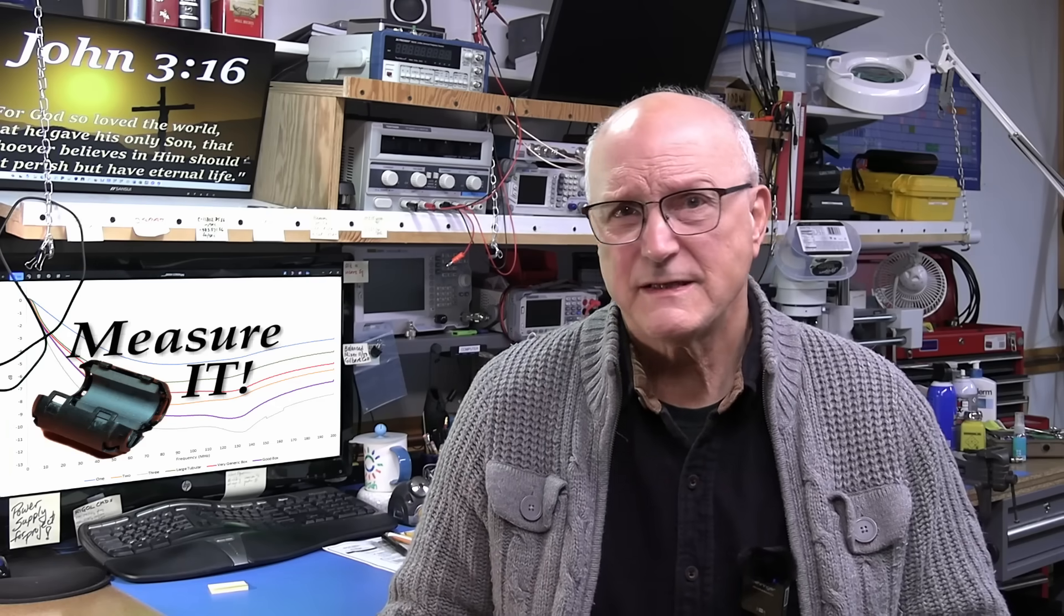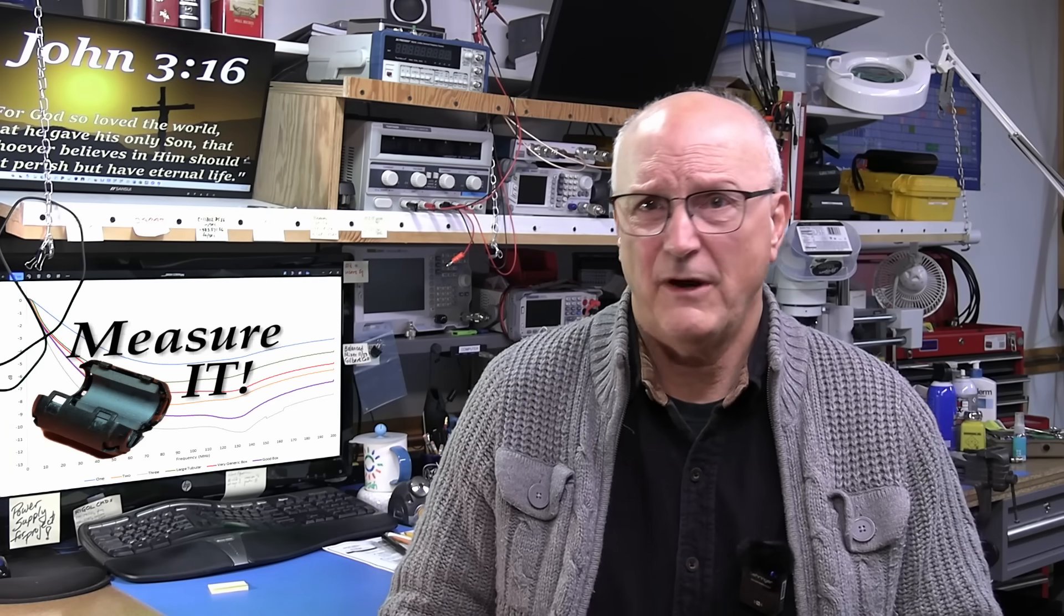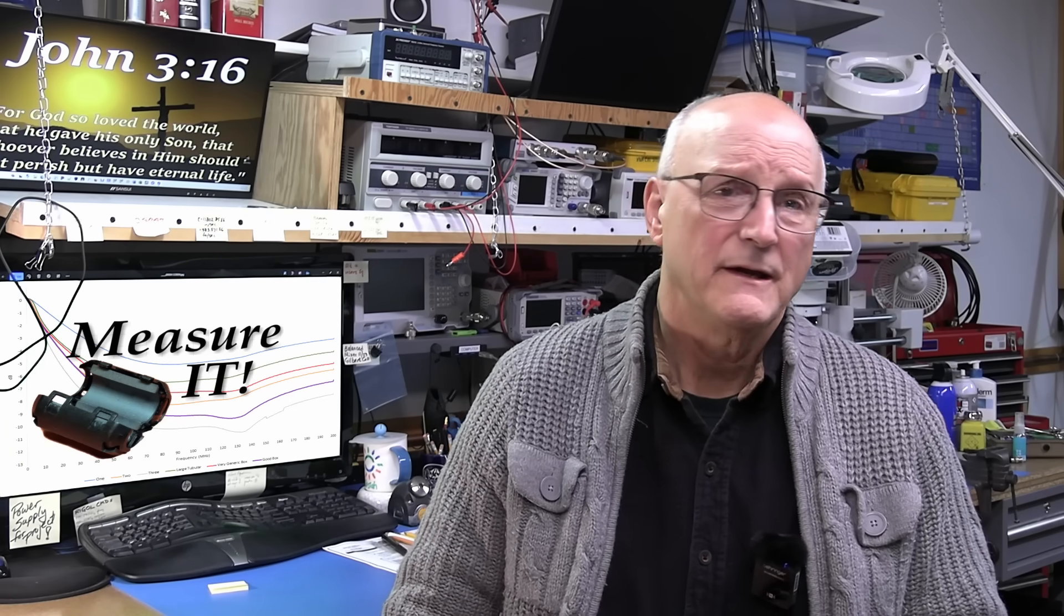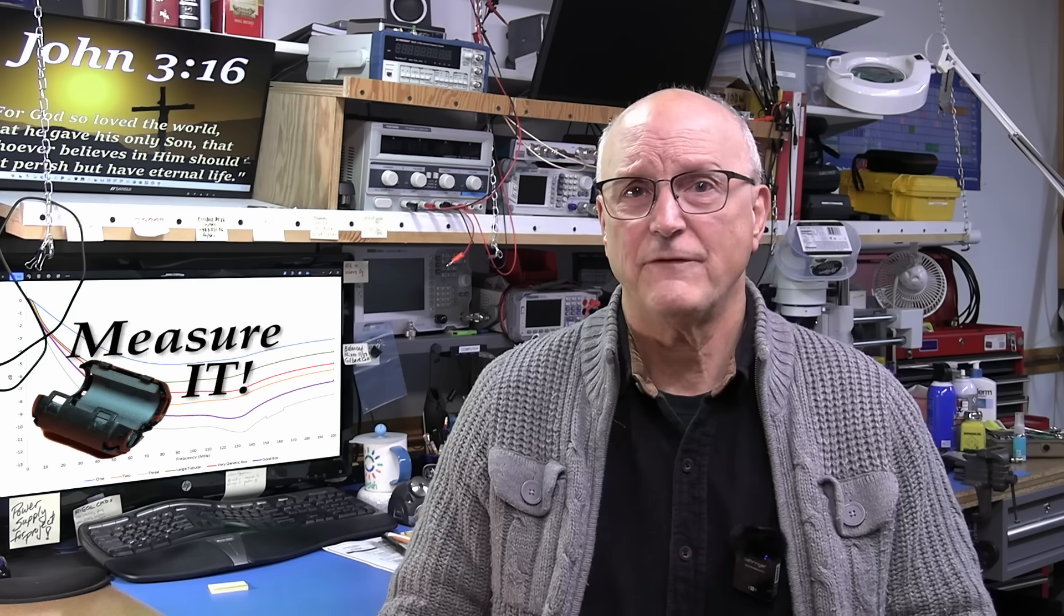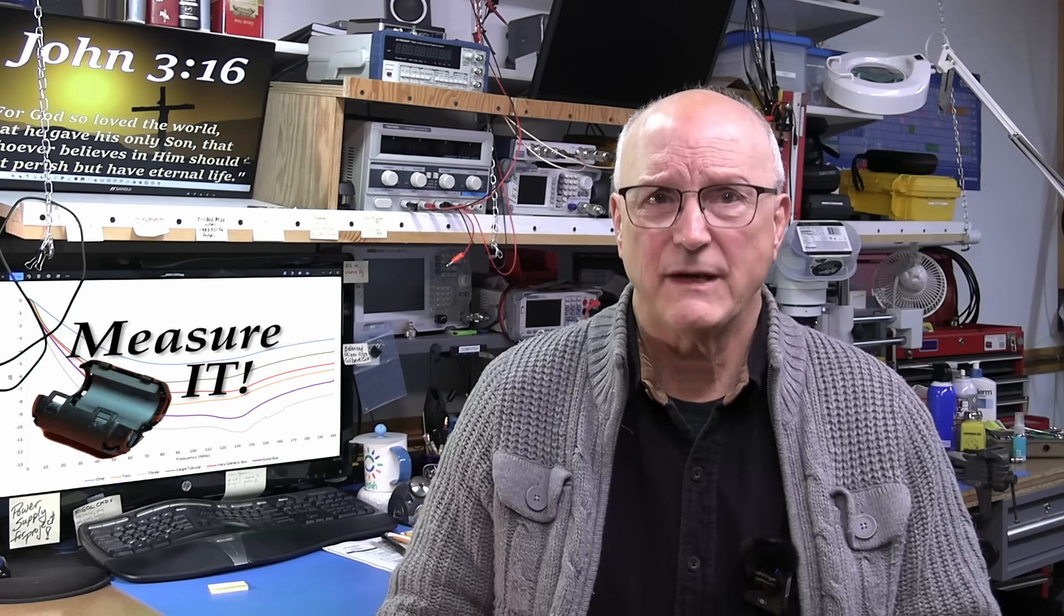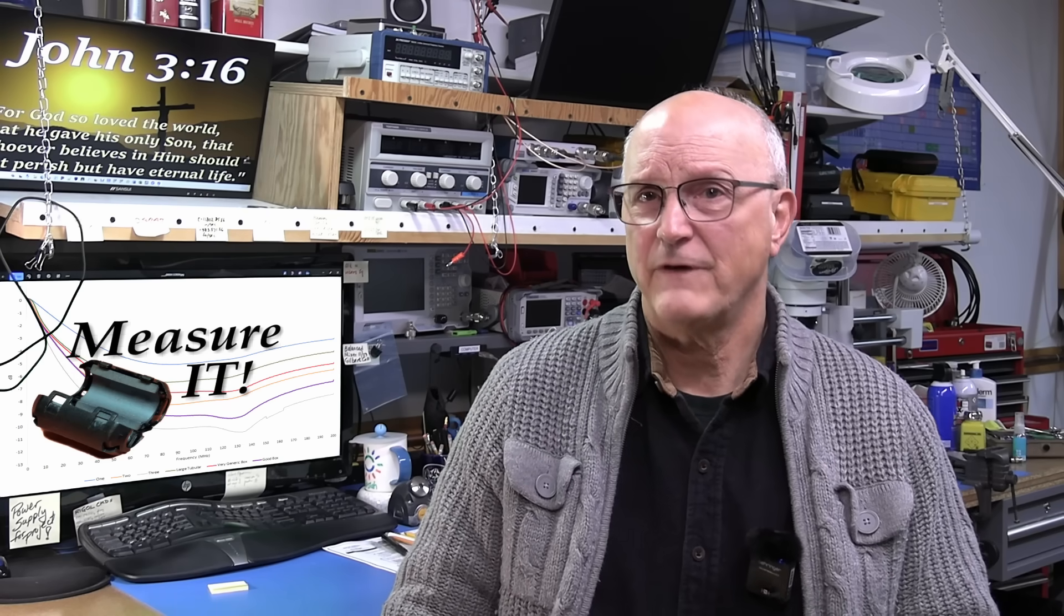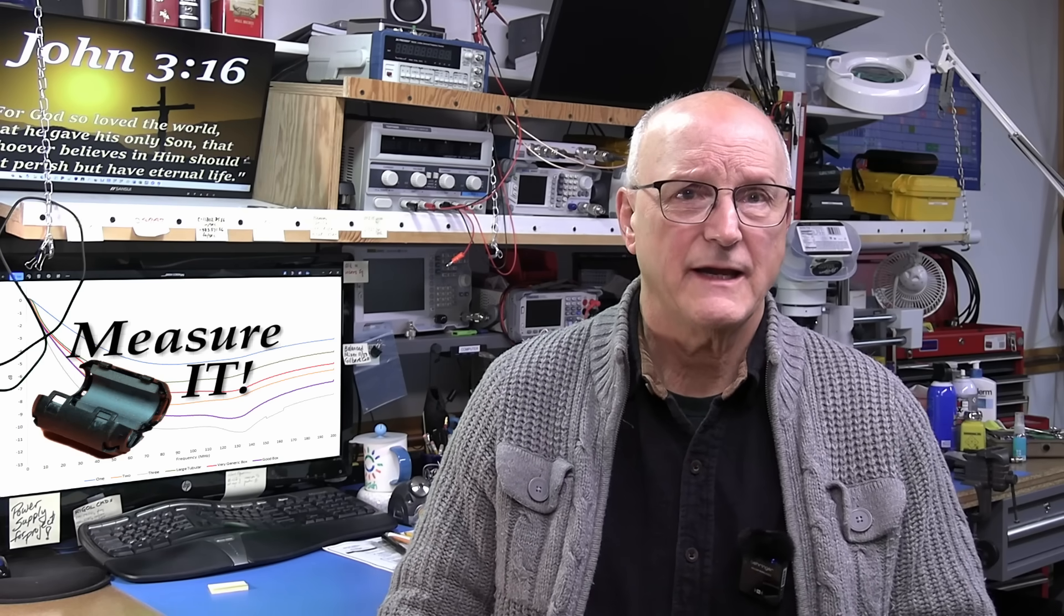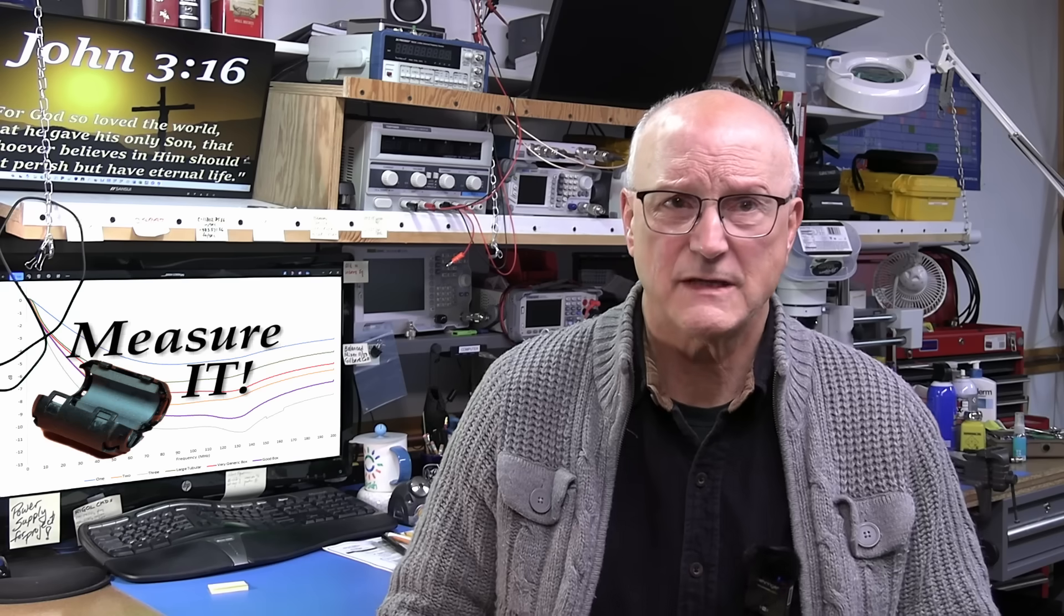Making the measurement is as simple as installing the clip-on ferrite on the wire loop, and then reading the values off of the screen using the on-screen marker. I will demonstrate with one of my clip-on ferrites. What you will see here is the data as imported to Excel.